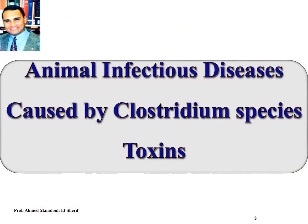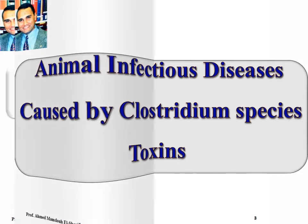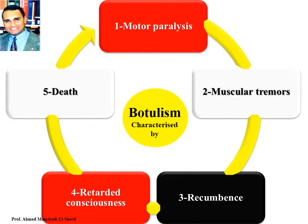Animal Infectious Diseases Caused by Clostridium Species Toxins. Botulism: It is an infectious disease of all animals characterized by motor paralysis, muscular tremors, recumbency, retarded unconsciousness, and death at the end of the disease.